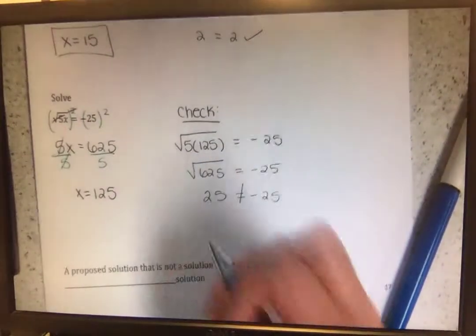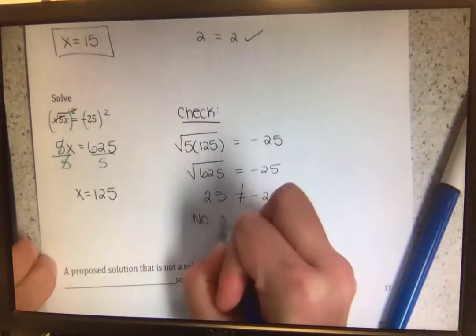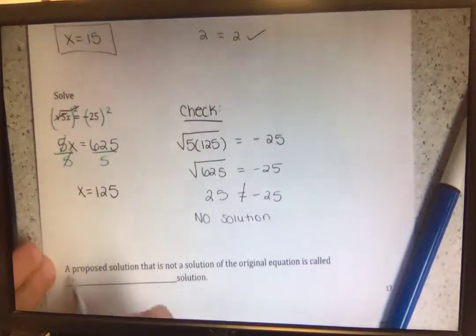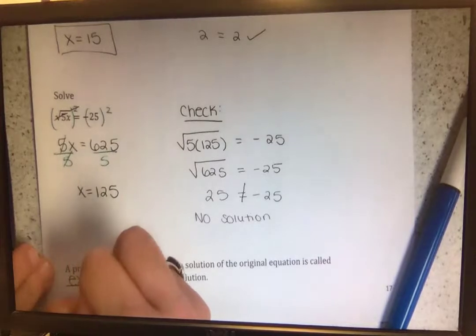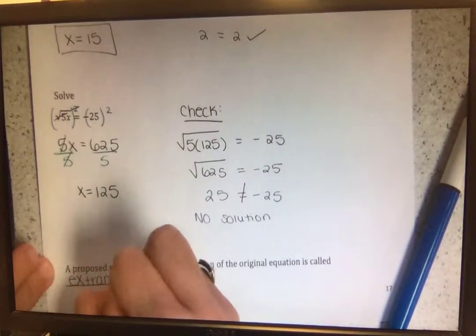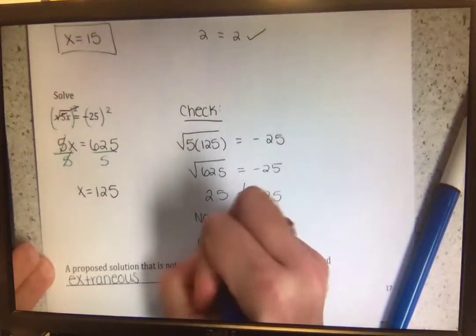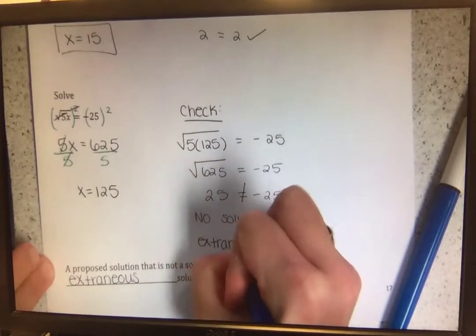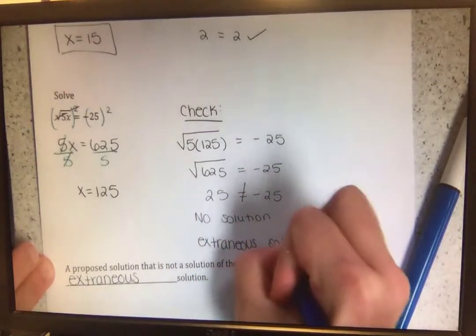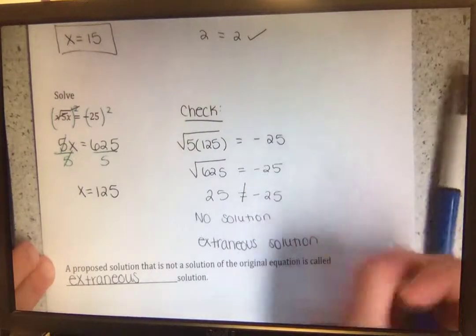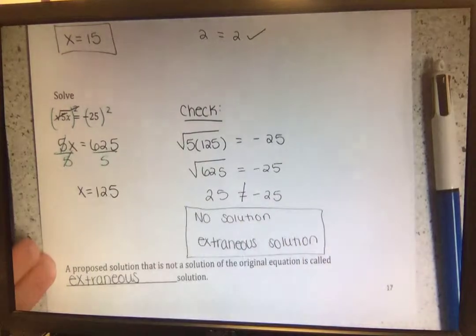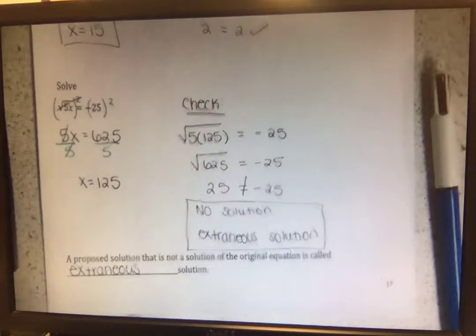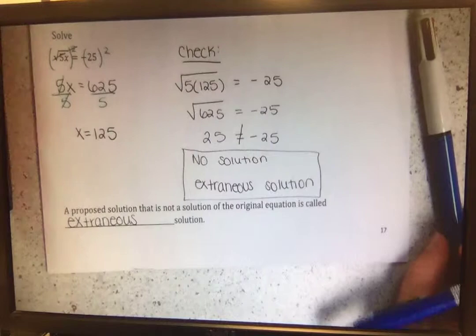So there's no solution. We got a proposed solution that doesn't actually work in the original equation — it's called an extraneous solution. We got an answer, but it didn't really work, so our answer is extraneous. That's why we have to check, to make sure our answer is not extraneous.